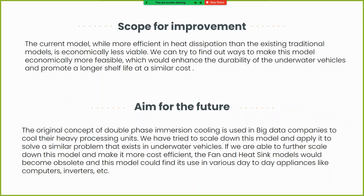The scope for improvement in the current model is that while it is more efficient in heat dissipation than existing traditional models, it is economically less viable. Finding ways to make this model economically more feasible would enhance the durability of underwater vehicles and promote longer shelf life at similar cost. The original concept of two-phase immersion cooling is used in big data companies; we have tried to scale it down. If further miniaturized and made cost-efficient, the fan and heatsink models would become obsolete, and this model could find use in day-to-day appliances like computers and inverters.